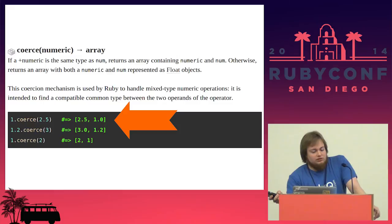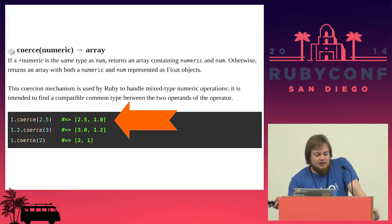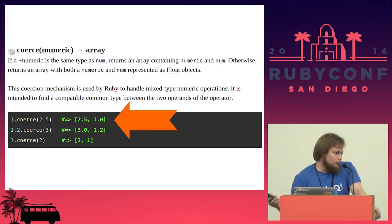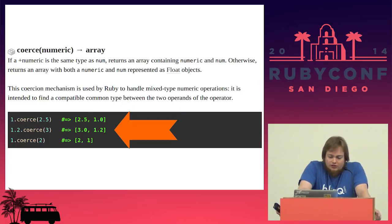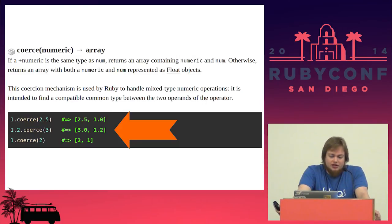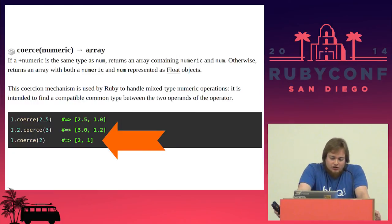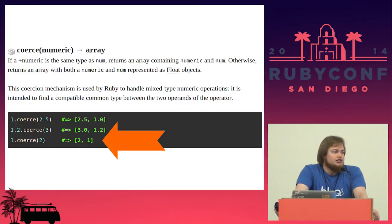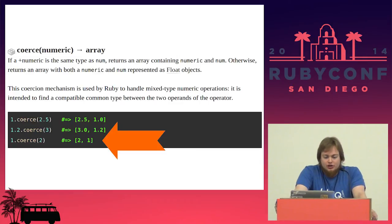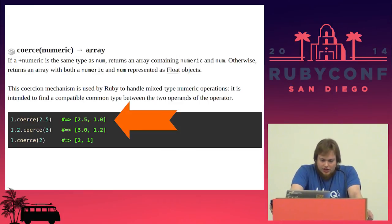The integer receiver 1 is being asked to coerce 2.5. In that case, 2.5 doesn't coerce to an integer, but 1 coerces to a float, so it returns an array of 2.5 and 1.0. Here, the float 1.2 is being asked to coerce 3, and 3 coerces to a float, so it returns the array 3.0, 1.2. The first number in the array should be the type that you want the entire operation to coerce to, which is why here we coerce to floats.